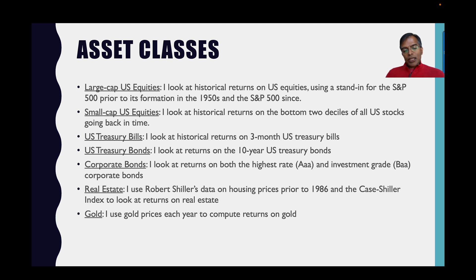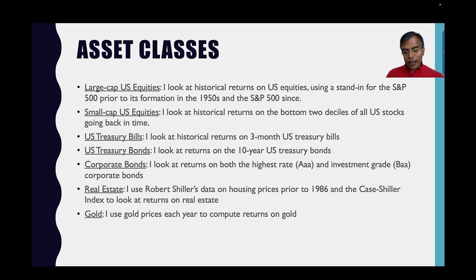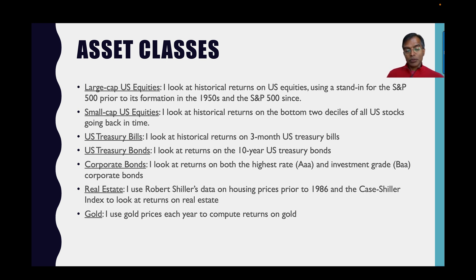For real estate, it's tricky because you don't have indices like you do with financial assets. I used Robert Shiller's data on housing prices prior to 1986 — he has the data set going back almost a century — and the Case-Shiller index since then, where it actually is a reported index on real estate prices. Incidentally, these are the prices of real estate; they do not include rental income or other income you could have earned by holding the real estate. Finally, I look at returns you'd have made by buying and selling gold at the start and end of each year, using gold prices to compute these returns.